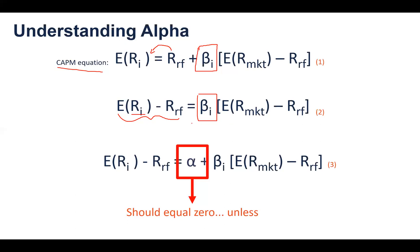Now, if we add a constant here, which is what we are doing on equation three, alpha, if CAPM holds, alpha should always equal zero, right? Because the only thing that should be changing and determining expected return of an asset will be beta. So if this equation holds, alpha should equal zero.